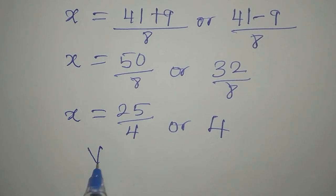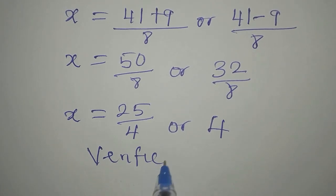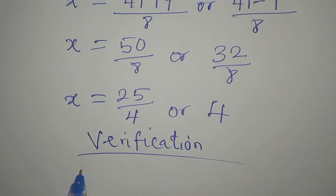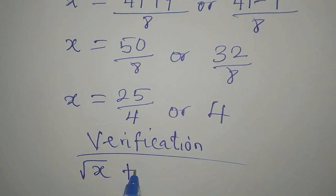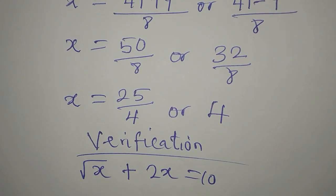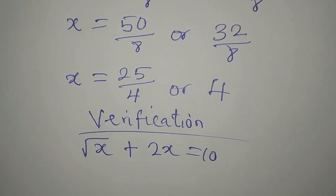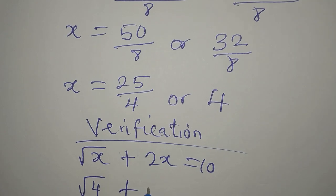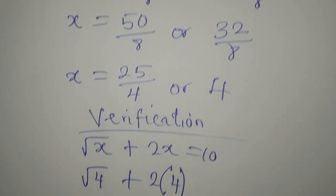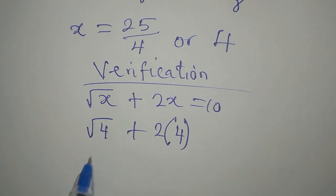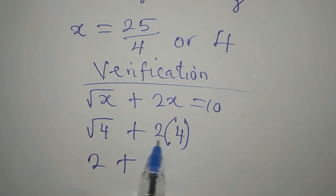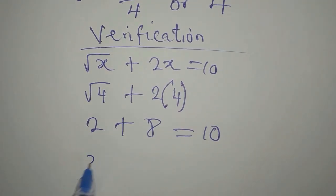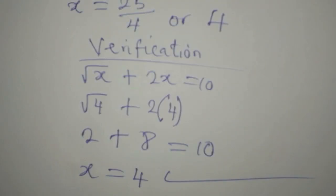Let's verify our results. The equation is square root of x plus 2x equals 10. It's obvious that x equals 4 works: square root of 4 is 2, plus 2 times 4 is 8, and 2 plus 8 equals 10. So x equals 4 satisfies the equation.